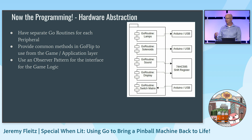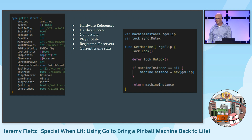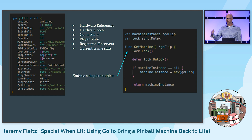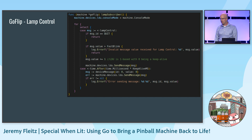Now we're getting into the hardware abstraction for the programming — exactly what GoFlip is intended to do — so that someone programming the game doesn't have to worry about how the actual hardware interfacing works. In GoFlip, there are separate Go routines running. It includes all hardware references and keeps track of all hardware state, but also tracks player state and game state. Importantly, it's a singleton object inside the package, so if someone tries to create another GoFlip instance, they just get the one single instance — so you don't have two instances competing over who's controlling the hardware.